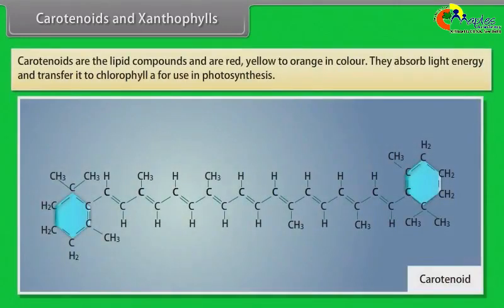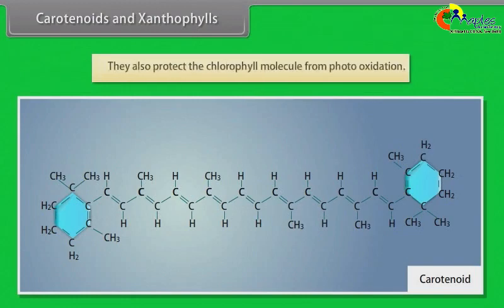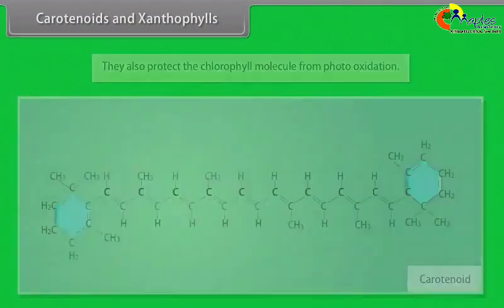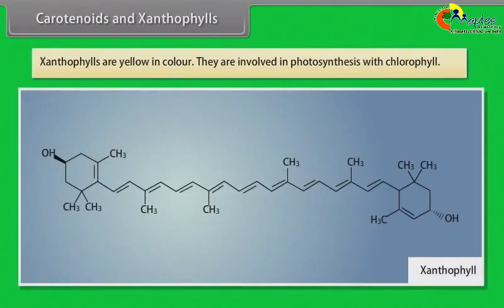Carotenoids are lipid compounds, red, yellow to orange in color. They absorb light energy and transfer it to Chlorophyll A for use in photosynthesis. They also protect chlorophyll molecules from photo-oxidation. Xanthophylls are yellow in color and are involved in photosynthesis with chlorophyll.